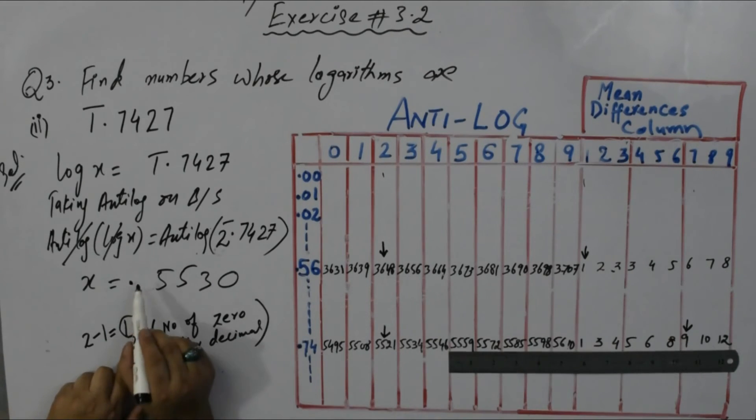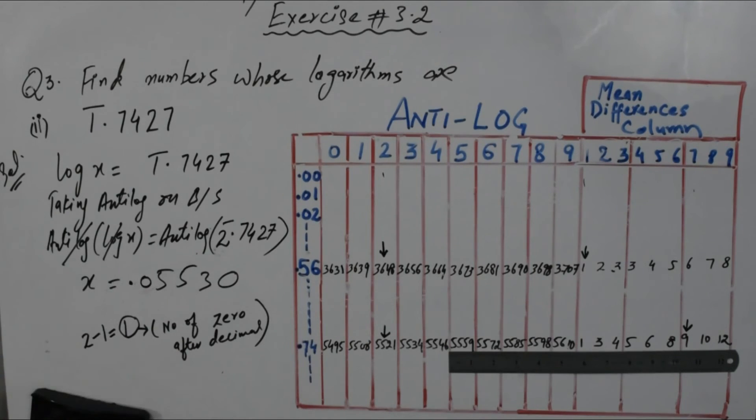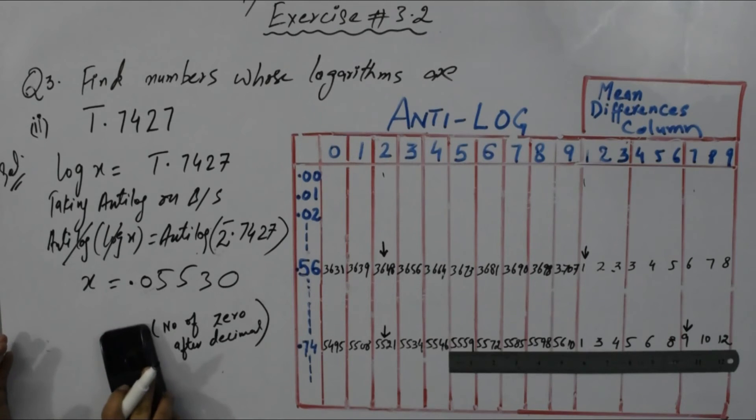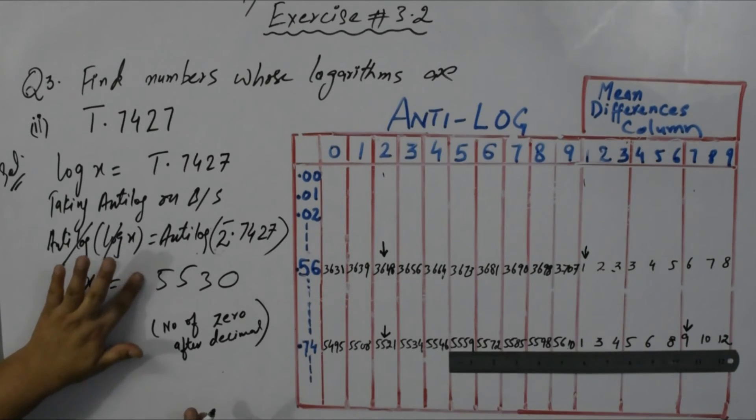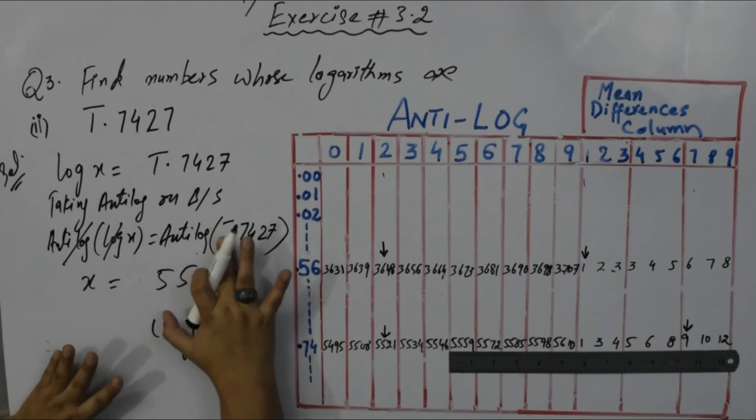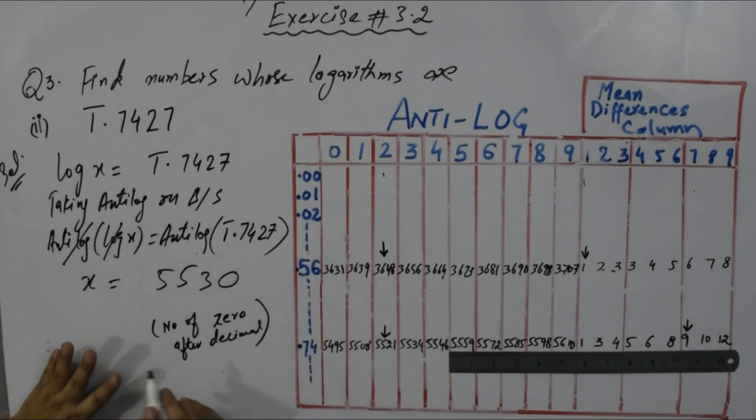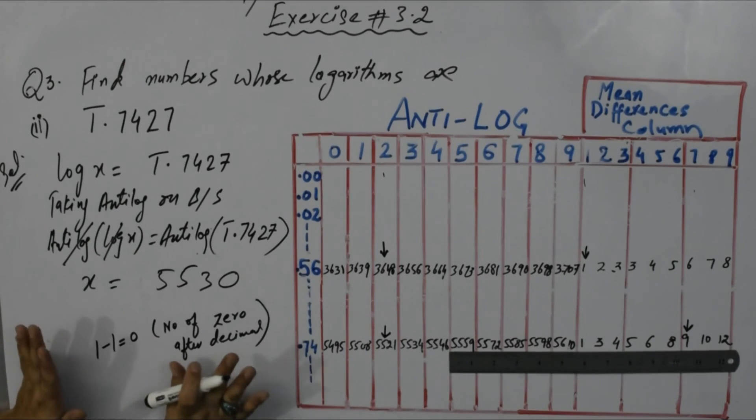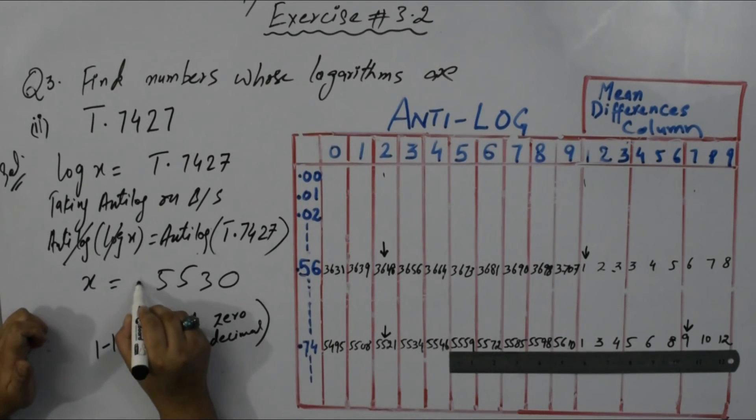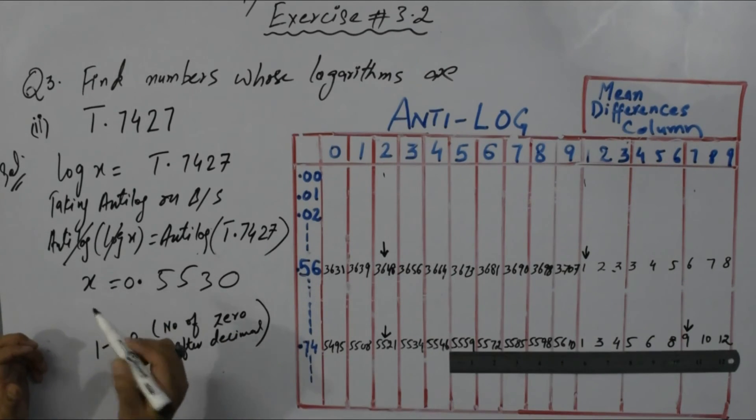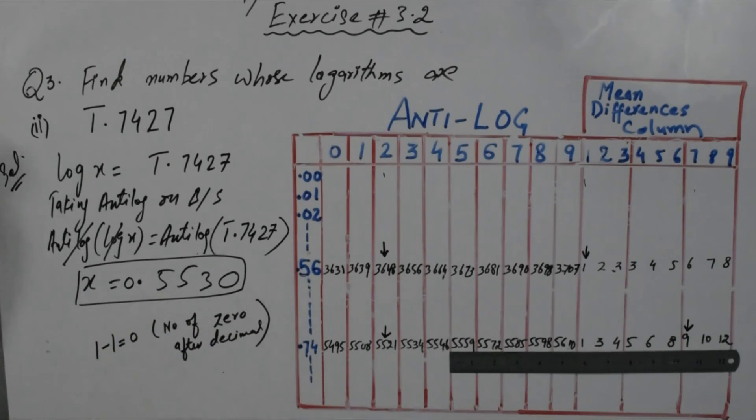In the question, characteristic is -1. From -1 when I subtract 1, it's zero. It means you don't put any zero - here only decimal, no zero after decimal. This is the number. Here there's no zero, just the number preceded by the decimal.